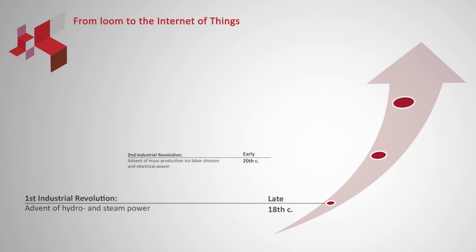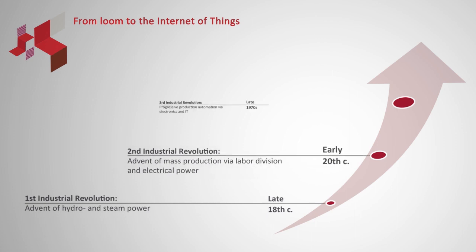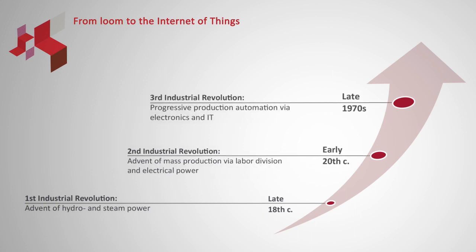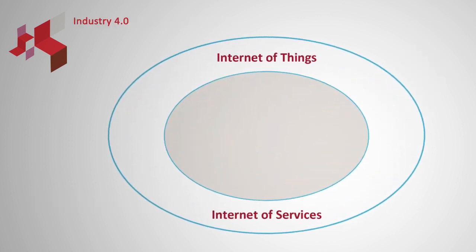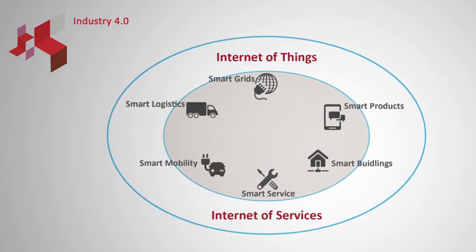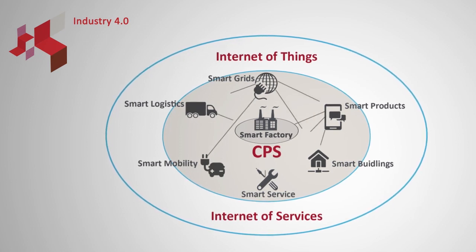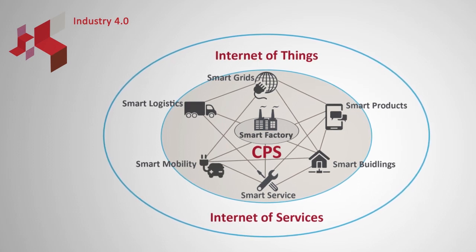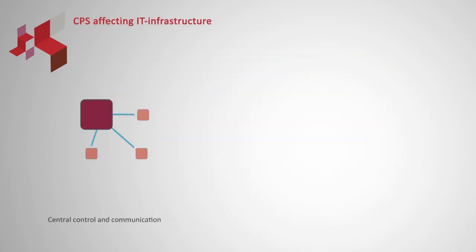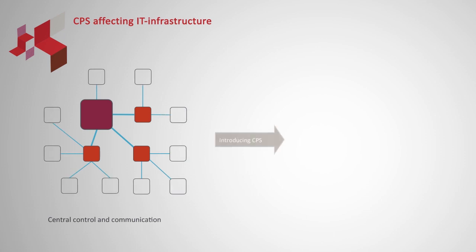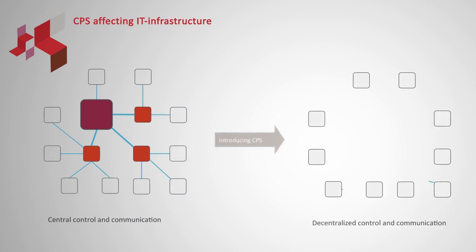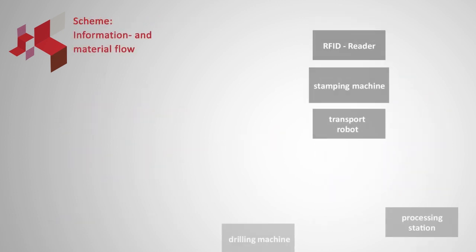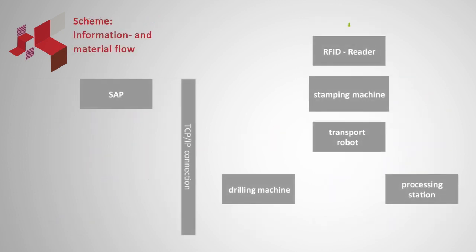After three industrial revolutions enabled by utilizing steam power, labor division, and the application of electronics, the fourth revolution is introduced by cyber-physical systems (CPS). With Industry 4.0, people, machinery, and resources communicate with each other as in a social network. This leads to a game-changing evolution along the entire value chain, where the manufacturing procedure is controlled based on current environmental conditions in a flexible and decentralized way.